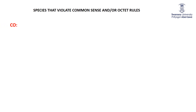Consider carbon monoxide. You can immediately see this will not follow common sense. Carbon is going to want four bonds. Oxygen is going to want two bonds. There's no way you can have a four-bond and a two-bond arrangement. So how will this molecule form? What can we draw to explain its formation?